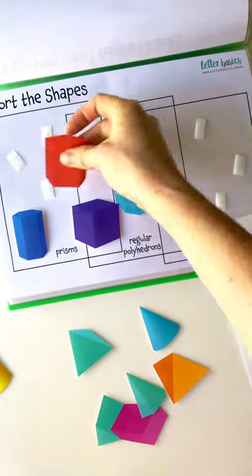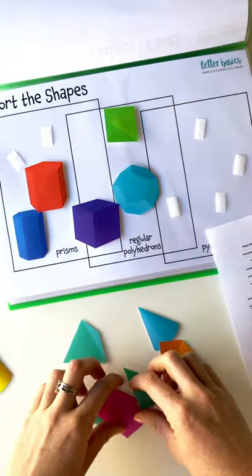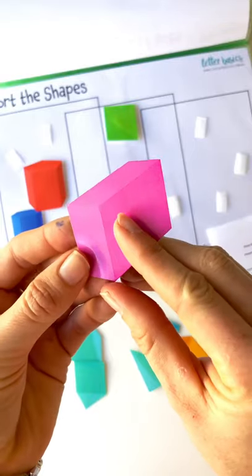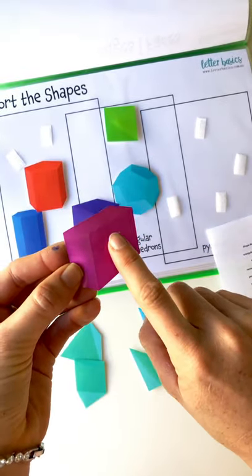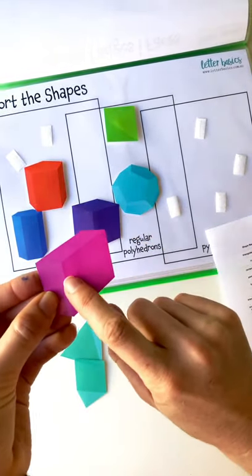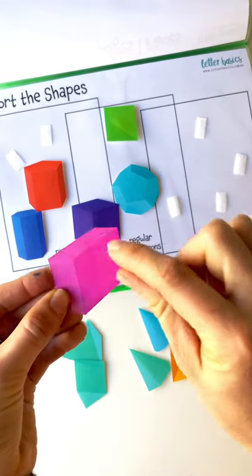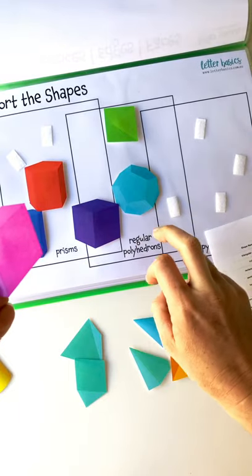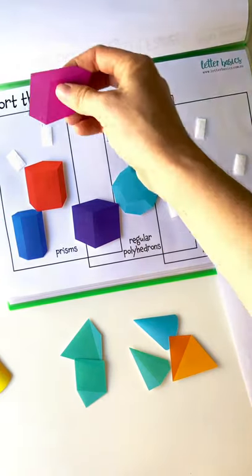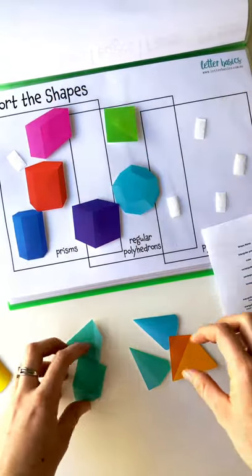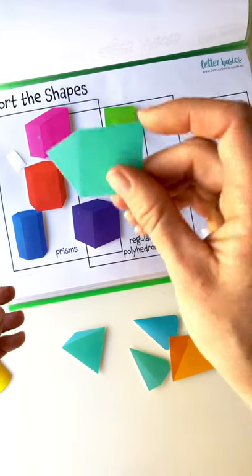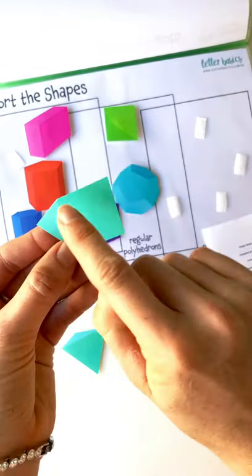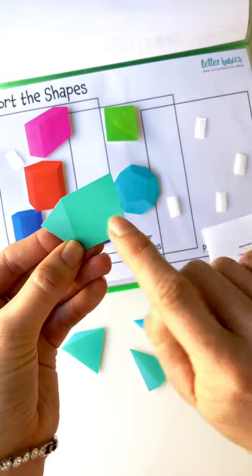We've got our rectangular prism. So the difference between the rectangular and the square is that this has got four long faces, they're not identical, so it's not a regular polyhedron, it is a prism. Rectangular prism. We've got our triangular prism, again triangle this side, triangle that side, joined together with flat faces.